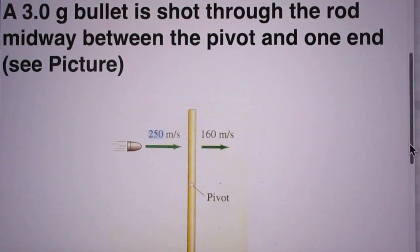A 3.0 gram bullet is shot through the rod midway between the pivot and one end.